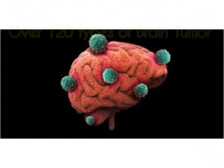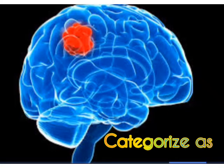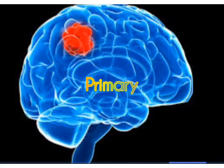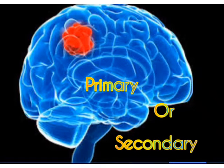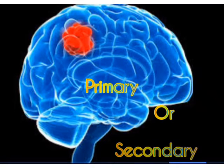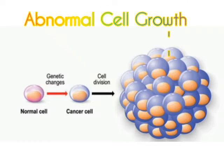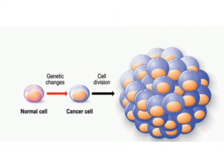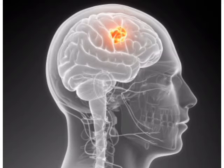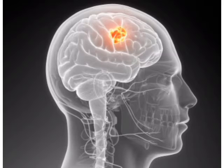There are over 120 types of brain tumors. Brain tumors are categorized as primary or secondary based on how the tumor was formed. A primary brain tumor starts with an abnormal cell growth within the brain, in places like the brain cells, membranes around the brain, nerves, or glands. These brain tumors can be benign or malignant.